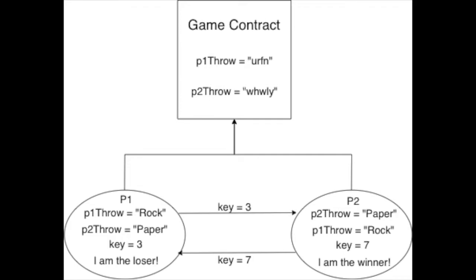This commitment scheme is important in blockchains because all of the information that is posted to a blockchain is in plain text. If we did not encrypt the data in some way to the game contract, then either player could look at the answers that are posted to the game contract before their own and potentially change their answer.